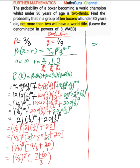So the probability is equal to (1/3)^8 times 67 over 3.